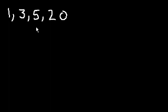So let's say I had the numbers 1, 3, 5, and 20, and I asked you what is the average of these four numbers? Well, what we do is we literally just add up the numbers and then divide by the number of numbers we have.